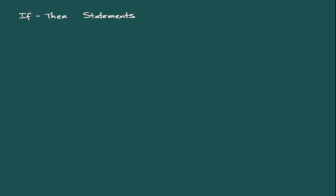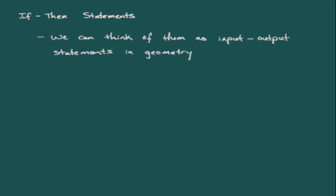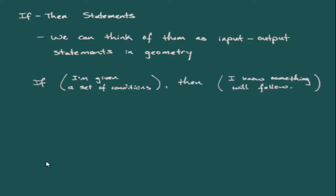In this video, we'll start looking at the contrapositive of the parallel postulate. Before we jump into that, let's talk a little bit about if-then statements and how we use them in geometry. If-then statements work as input-output statements — there is a certain set of conditions, and if those conditions are met, then we know something will follow. For example, if the water is 100 degrees centigrade, then it will be boiling.